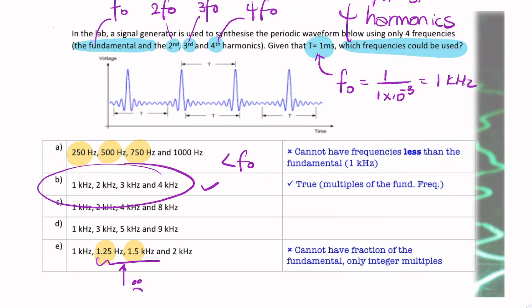Here we have non-integer multiples, and we're not allowed to use non-integer multiples. So that won't work. It has to be integer multiples. We can use twice the fundamental, three times, four times, but not 1.25. So that's a straightforward question there.